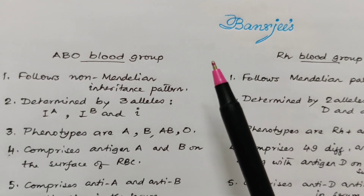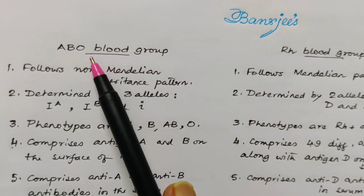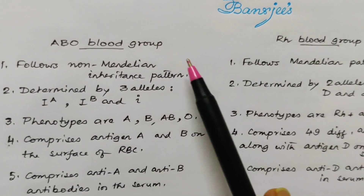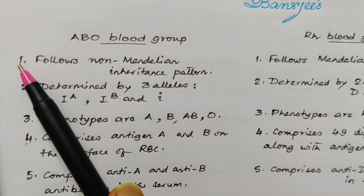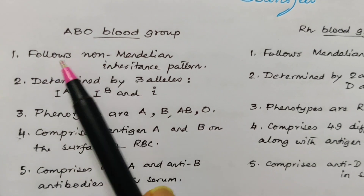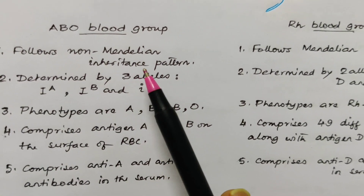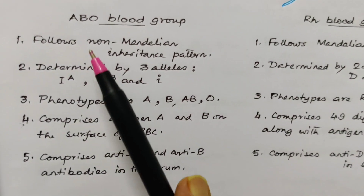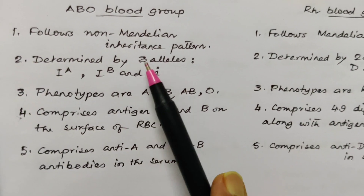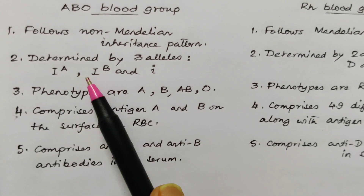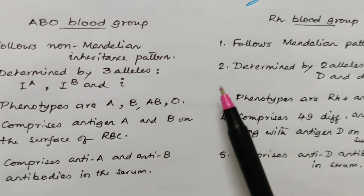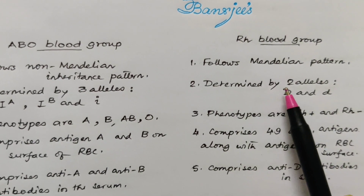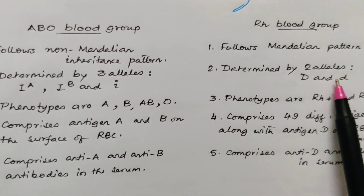The second question: the difference between ABO blood group and RH factor. ABO blood group follows non-Mendelian inheritance patterns, whereas RH follows Mendelian patterns. ABO is determined by three alleles — Ia, Ib, and small i — whereas RH is determined by two alleles, capital D and small d.